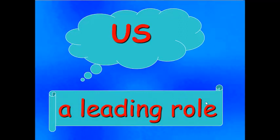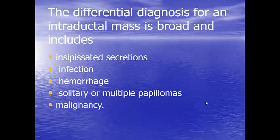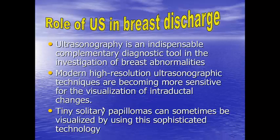Ultrasound with color Doppler has a leading role in the diagnosis of intraductal pathology. The differential diagnoses for an intraductal mass are broad and include inspissated secretions, infection, hemorrhage, solitary or multiple solid masses, either solitary or multiple papillomas, or malignant lesions. Ultrasound is an indispensable complementary tool in the investigation of breast abnormalities, especially intraductal changes. A tiny solitary papilloma can be well detected by ultrasound.